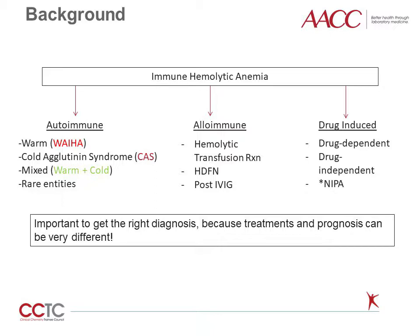The second category is alloimmune hemolysis. This is when the immune system produces an antibody as a result of an exposure to a non-self red blood cell antigen, for example during a red blood cell transfusion or during a pregnancy. If the patient is then re-exposed to the non-self antigen, for example during a subsequent red blood cell transfusion, then the antibodies can mediate the destruction of the red blood cells. This is known as a hemolytic transfusion reaction.